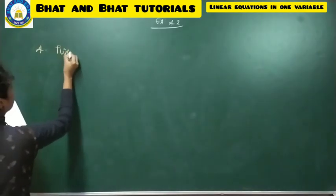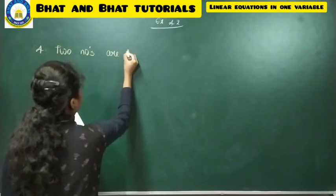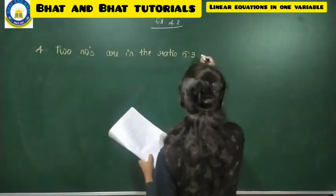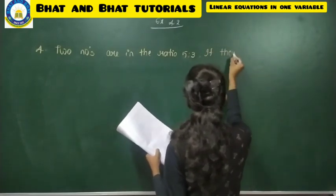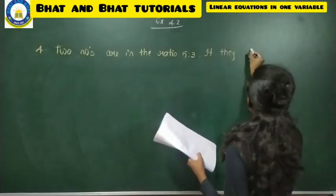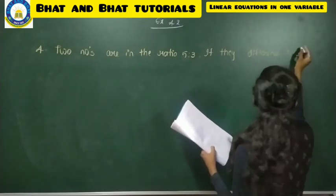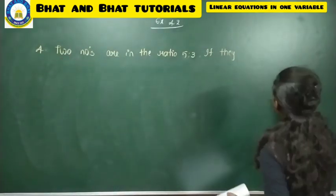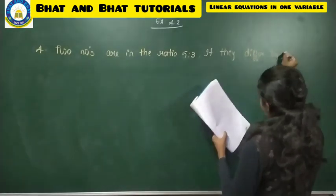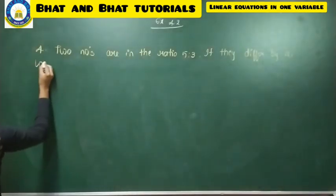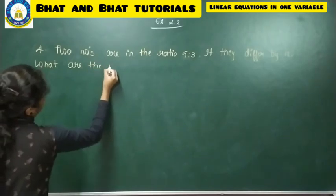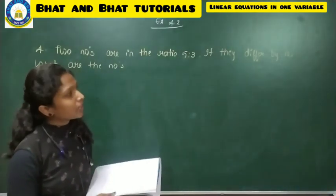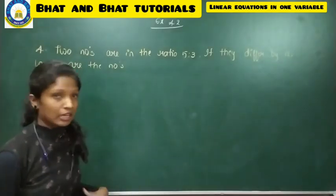Problem number 4: Two numbers are in the ratio 5:3. If they differ by 18, what are the numbers? There are two numbers in the ratio 5:3, and their difference is 18. We need to find what the numbers are.